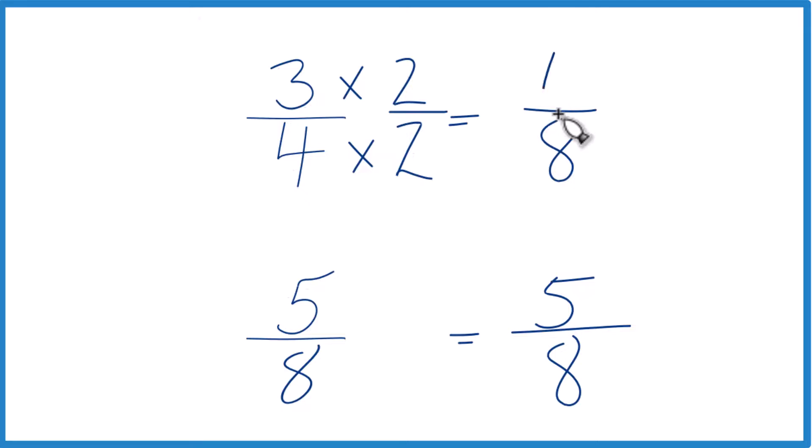Three times two, that's six. And six-eighths, that's an equivalent fraction to three-fourths. They're both equal to the decimal 0.75.